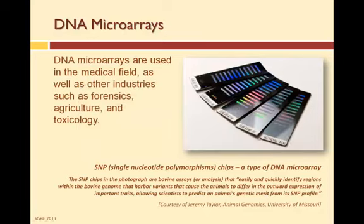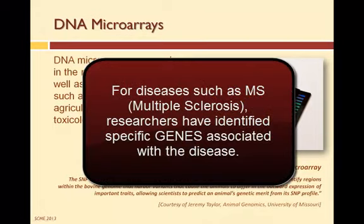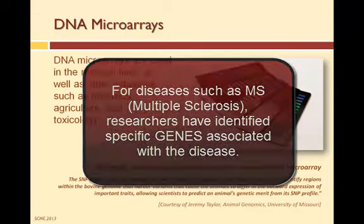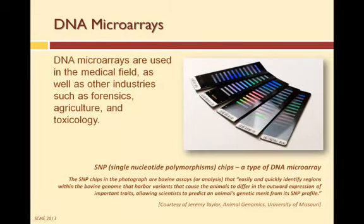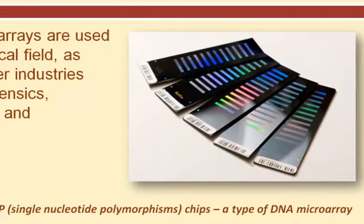We now know more about diseases such as diabetes, multiple sclerosis, heart disease, and cancer than we've ever known before. For some of these diseases, such as MS or multiple sclerosis, researchers have been able to identify specific genes that influence the risk of getting the disease. Such discoveries may eventually lead to the development of therapeutics that can prevent a disease, control a disease, and possibly even cure it. These single nucleotide polymorphism chips, or SNPs, are a type of DNA microarray.